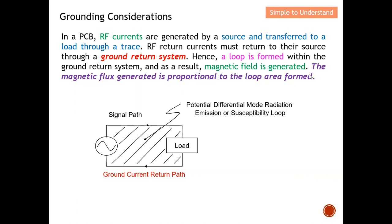The magnetic flux generated is proportional to the loop area formed. This means the magnitude of the magnetic field is proportional to the loop area — the larger the loop area, the larger the magnetic field generated. The more hazardous it becomes if this manages to couple over to a neighboring device and disturb it. Conversely, any neighboring device noise can also couple back and disturb your circuit. This is the core issue with having a large loop area formed by the supply and return system.